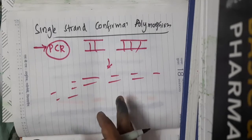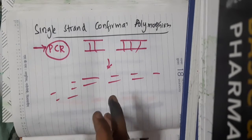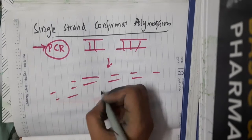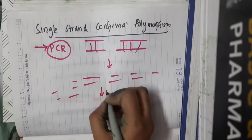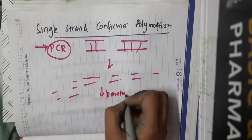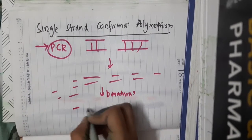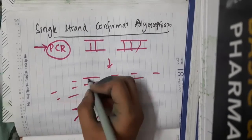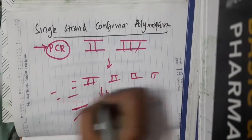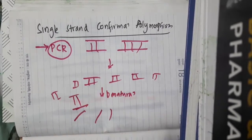After amplifying the DNA with the help of PCR, we will do denaturation. By doing denaturation, you will get the single strands of DNA from the double stranded DNA which was amplified.